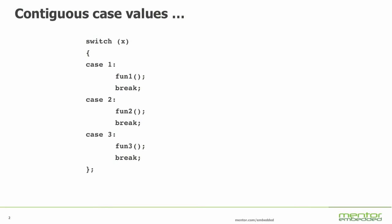The answer, it turns out, is not always. Of course most code nowadays is written in C and C++, and I would suggest that sometimes that's really the best way of writing the code. Let's look at an example. Here's a switch statement, a common structure in a C program, and in this case the switch statement has contiguous case values — each value follows on from the previous one. What the compiler can do is generate a simple jump table. It can use the case value to index off that table to find the address to go to. Very simple code and very efficient.